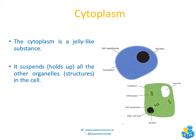The second structure we're going to have a look at is the cytoplasm. If we have a look at the cytoplasm, it's always the structure that's on the inside of the cells. The cytoplasm is a jelly-like substance, and it suspends or holds up all of the other organelles or structures that are in the cell — for example, the nucleus in the animal cell, and the nucleus, chloroplasts, and vacuoles in the plant cell.